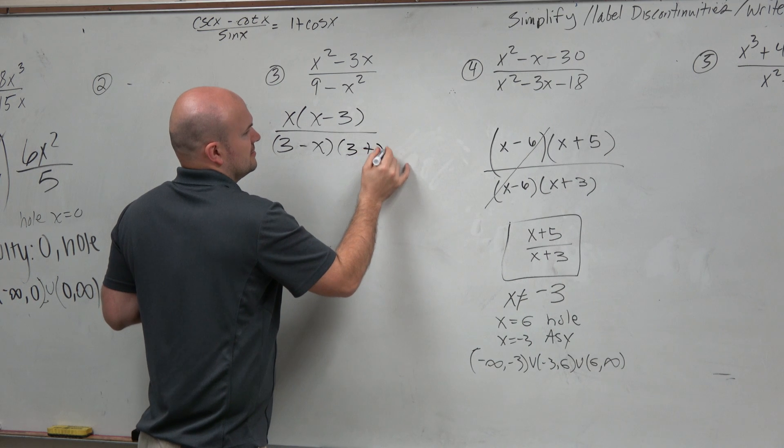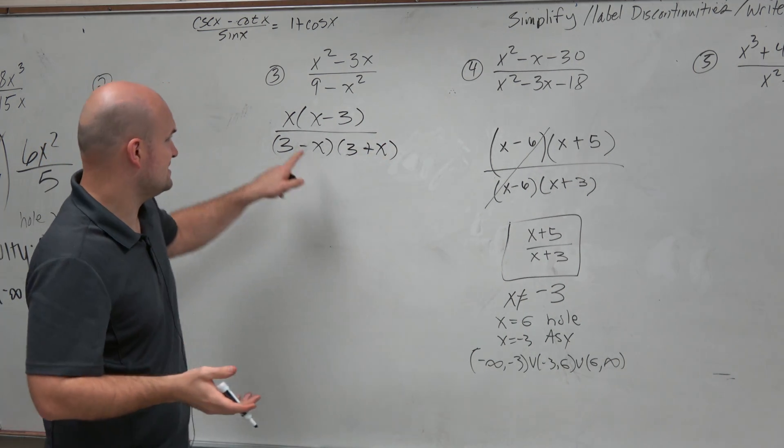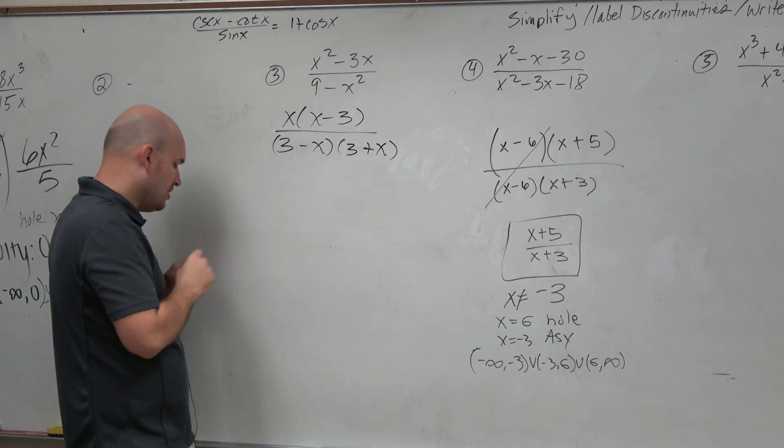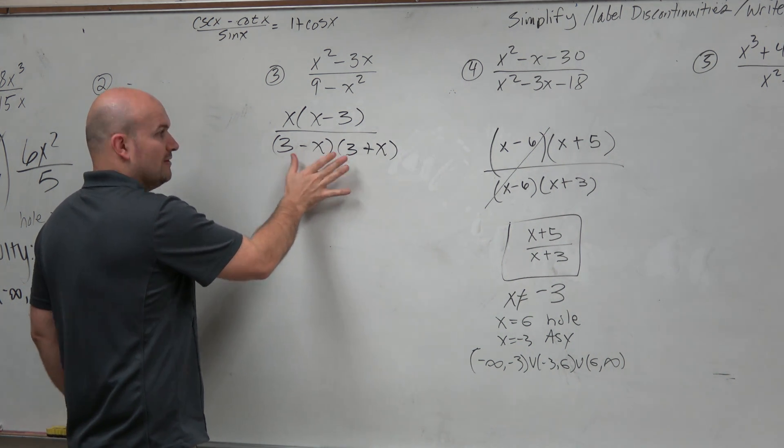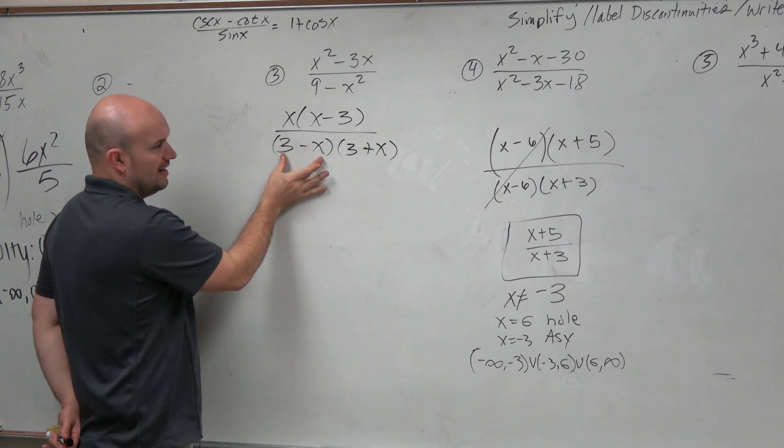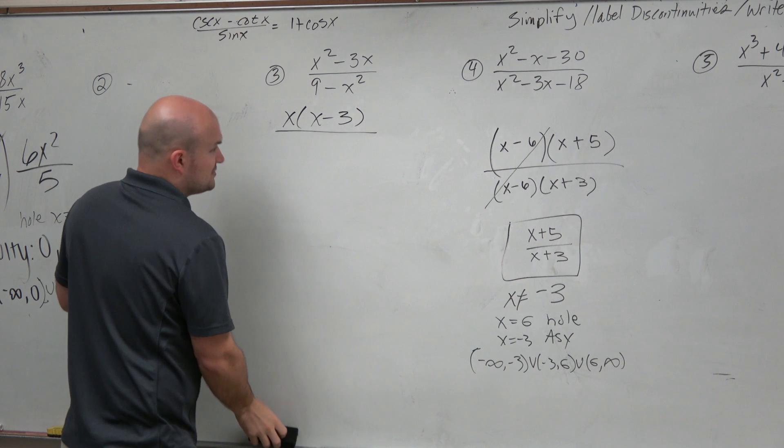3 plus x. Now the problem is, that's not exactly the same as what my numerator is, right? So it doesn't really divide out. Another way I could do this - I could actually factor out a negative from here. If I want to get this to be negative and that to be positive, I could factor out a negative from this term, but that might be a little confusing.